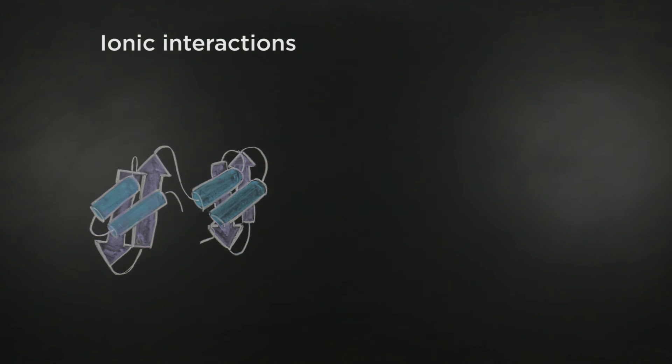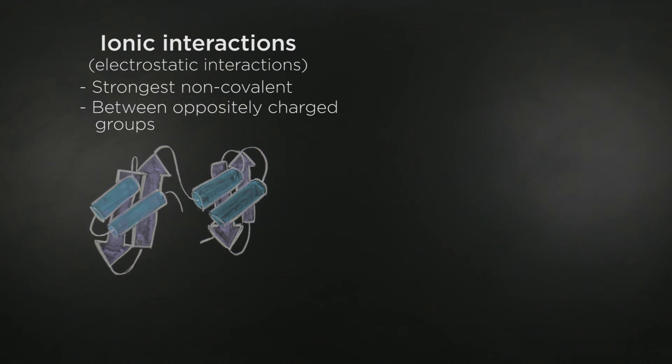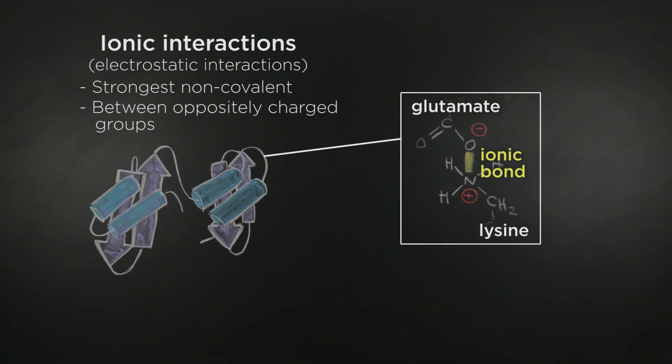Ionic interactions, also referred to as electrostatic interactions, are the strongest types of non-covalent interactions, and they occur between oppositely charged groups. Amino acid side chains with opposite charges, such as glutamate and lysine, will form an ionic bond. This is an example of an attractive electrostatic interaction.